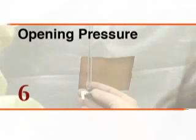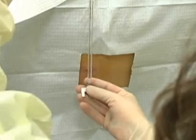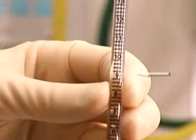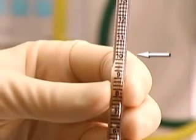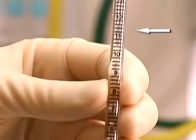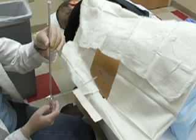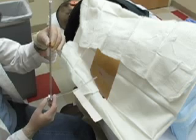To obtain an opening cerebrospinal pressure, the patient must be in the lateral recumbent position. Use a flexible connector and attach a manometer to the hub of the spinal needle. After waiting for the column of fluid to rise and possibly seeing pulsation from cardiac or respiratory motion, you may take a measurement. If the cerebrospinal fluid pressure exceeds 25 centimeters of water, you should closely monitor the patient for signs of herniation and determine the cause of the elevated intracranial pressure.